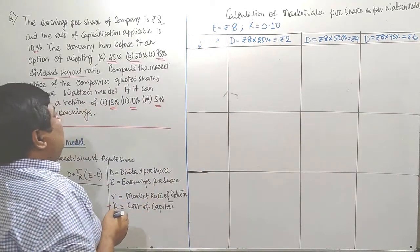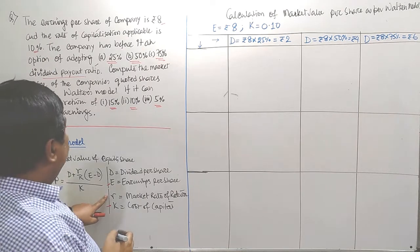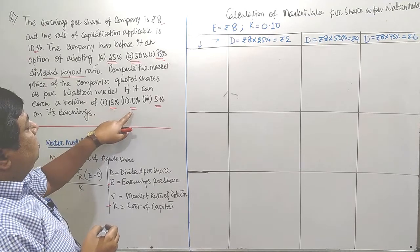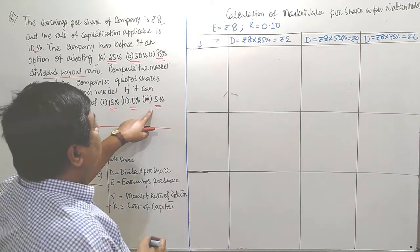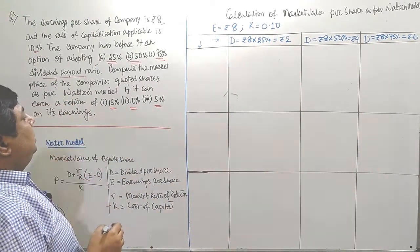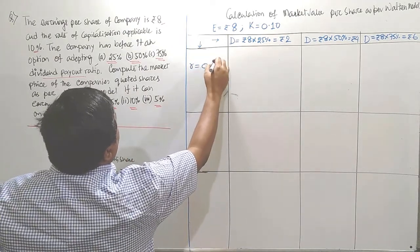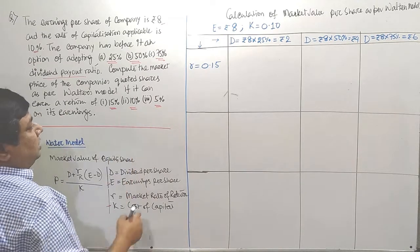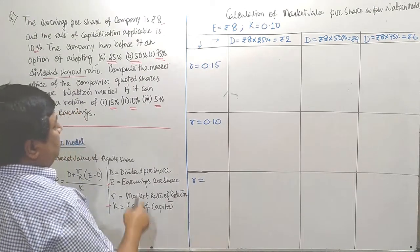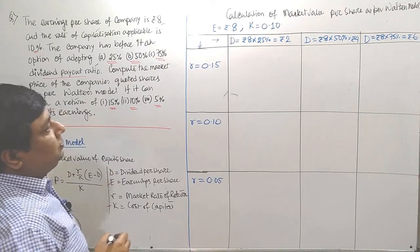The following one is the market rate of return, R. Option 1 is 15%, option 2 is 10%, and option 3 is 5%. We are going to follow that in option 1, R equals to 0.15. Option 2, it is 10%, R equals to 0.10. Option 3, it is 5% only, then 0.05.